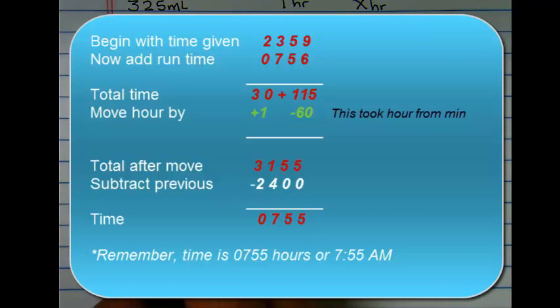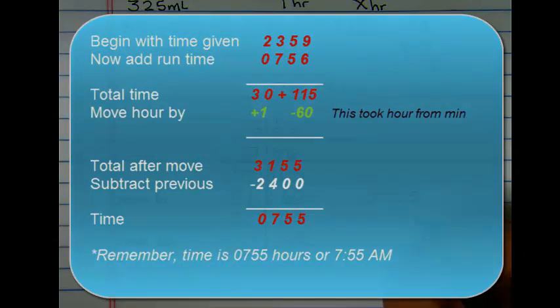Now I can move my day by subtracting the 2400 hours in a day to get the exact time the next day, which would be 0755 hours or 7:55 AM.